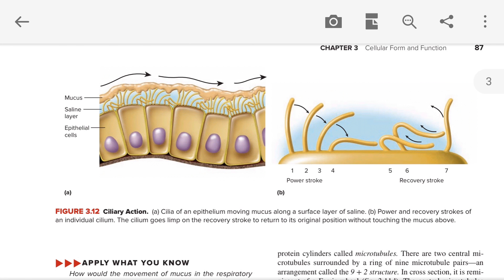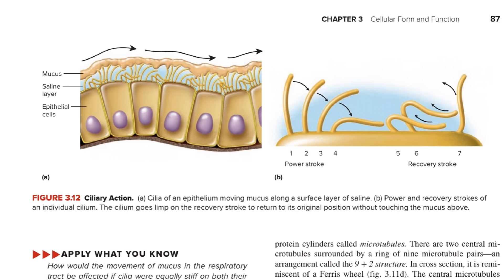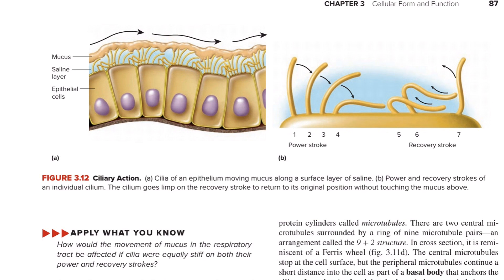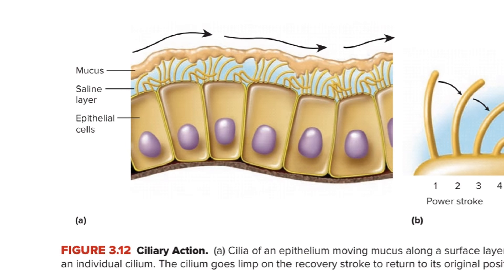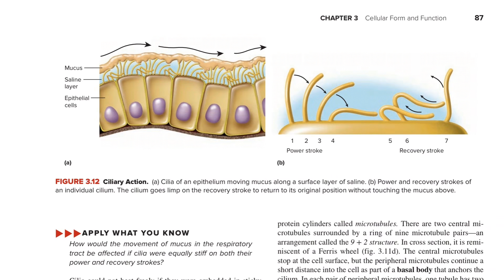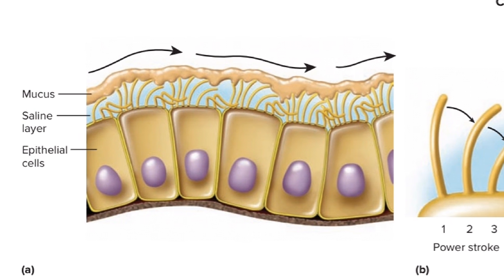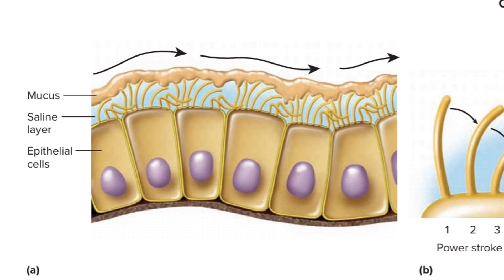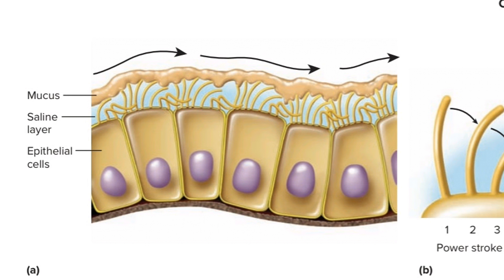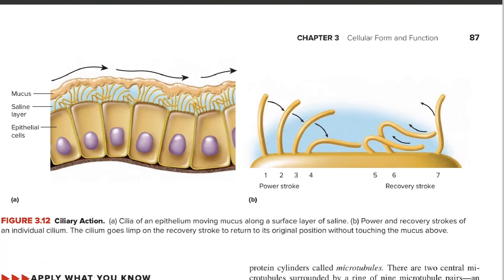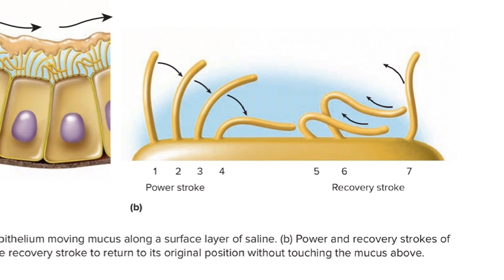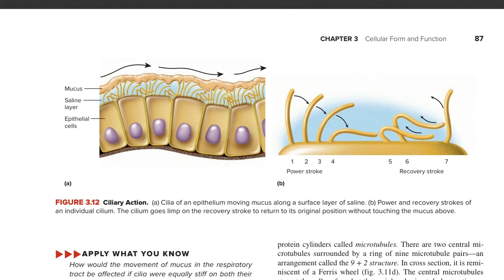In this figure, ciliary movement — or ciliary action — is shown. Epithelial cells are shown with a saline layer and mucus. Due to ciliary beating, the mucus is propelled forward. This includes the power stroke followed by the recovery stroke, which we are going to discuss.